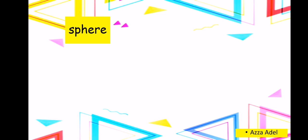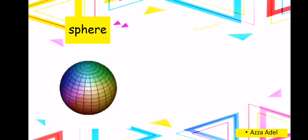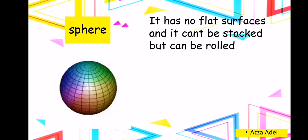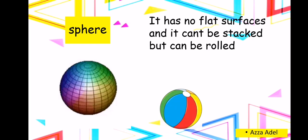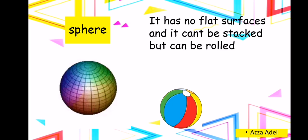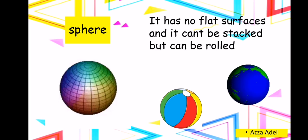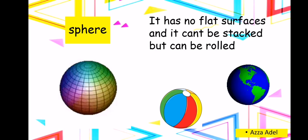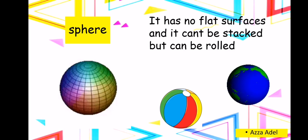Sphere. It has no flat surfaces and it can't be stacked, but it can be rolled — we can roll it on the floor. Such as a ball: can you roll the ball? Yes. Can you stack a ball? No. A ball is shaped like a sphere, a 3D shape. And a globe — where we're living — the globe is shaped like a 3D shape which is a sphere. Can you think of something else that's shaped like a sphere?